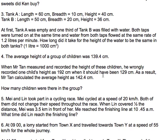When Mr. Tan measured and recorded the height of these children, he wrongly recorded one child's height as 192cm when it should have been 129. So as a result, Mr. Tan calculated the average height as 142.4cm. So instead of 139.4, Mr. Tan actually calculated the average height as 142.4. It basically means that he actually made the whole group of children's average height taller than what it's supposed to be because he made a mistake in recording 192 instead of 129. So the question is, how many children were there in the group?